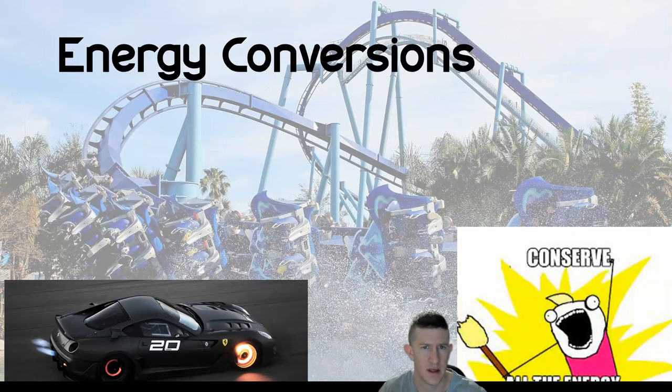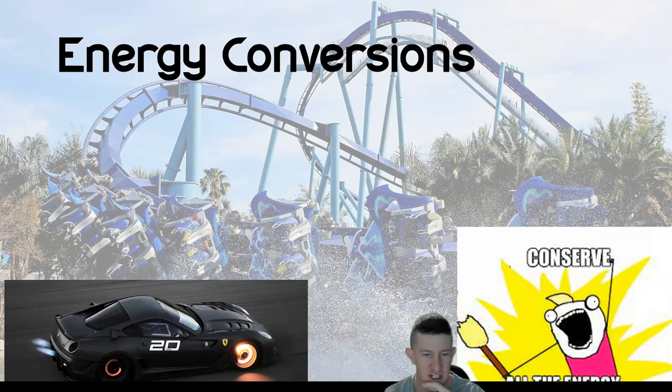So why did I show you this video? It's all to do with energy conversions. Energy can be converted from one thing to another. In the video, which emphasizes this photo here, the brake rotors of those cars were glowing red hot as they came in. Where does that heat come from? The heat has come from kinetic energy. You're converting that kinetic energy into heat in order to slow down the vehicle. That's how the brakes are working.